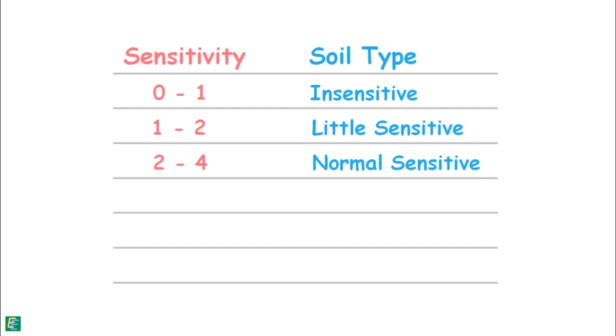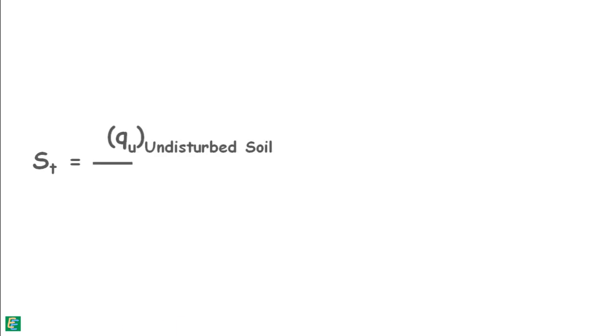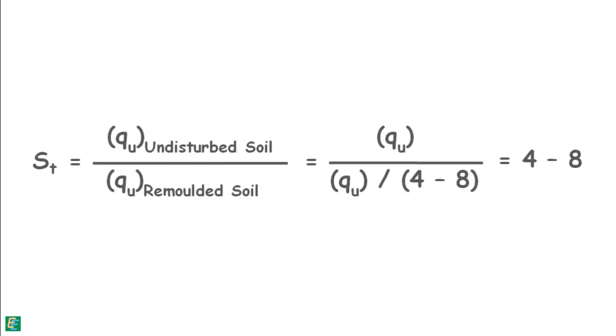If sensitivity is between 4 and 8, then soils are sensitive soils. On remolding, these soils lose more than 75% of their strength.